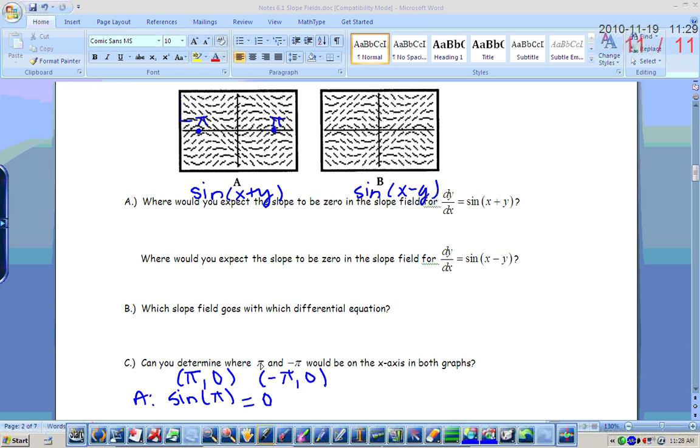Because you can see your zero slopes coming down like that. And so this would be pi right here, and negative pi would be right there. Okay, if I'm looking for pi on the x-axis, then that would be the point pi comma zero. So if I want to find the slope at the point pi comma zero, then for the sine of x plus y graph, that would be, the slope would be the sine of pi plus zero, or the sine of pi. And that value equals zero. So that's why I'm looking for where the slope is zero. And then for graph B, the slope would be the sine of pi minus zero, which is still zero. So that's where pi would be, and that's where negative pi would be. Just kind of a different way to think about that graph.